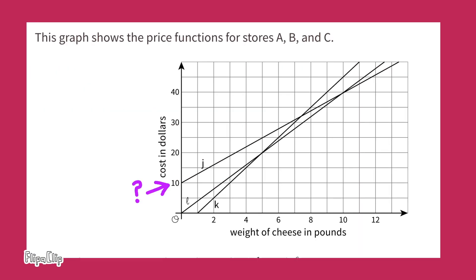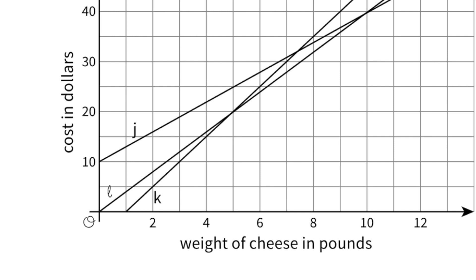Looking at this graph, I see a line that starts at zero pounds of cheese at ten dollars, which makes me think this might be Store C — the store that charges a delivery fee of ten dollars. The horizontal axis represents the weight of the cheese in pounds, and the vertical axis represents the cost in dollars. The origin at the bottom left corner represents zero pounds of cheese and zero cost in dollars.